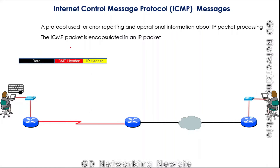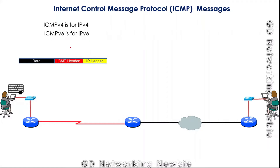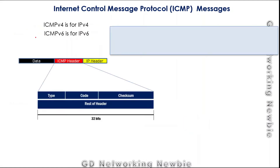ICMP can generate messages and send them back to the source. To understand how, we look at the ICMP header. There are two versions: ICMPv4 for IPv4 and ICMPv6 for IPv6. Both versions have different messages, but some messages are common to both. We will discuss some of those common messages and explore the ICMP header.